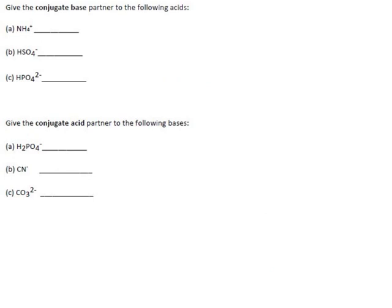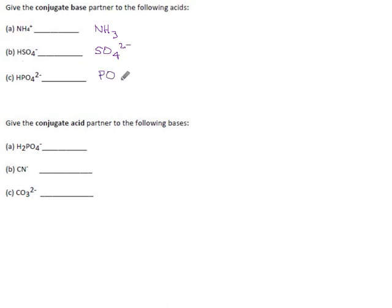A little more practice. All of these are acids — what will their conjugate bases look like? You write the formula with one hydrogen gone: NH4⁺ turns into NH3, and the charge goes from plus 1 down to 0. Next, lose a hydrogen — charge goes from minus 1 to minus 2. And again, lose a hydrogen — charge goes from minus 2 down to minus 3.